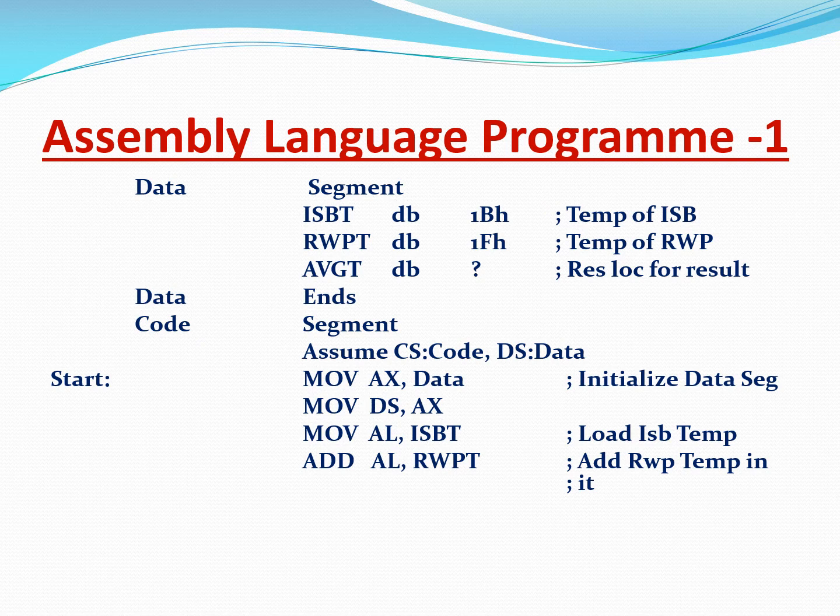Then we say 'MOV AL, ISBT' — so we load the Islamabad temperature into the lower byte of AX, which is AL. Then 'ADD AL, RWPT' — so we add the Rawalpindi temperature to it.